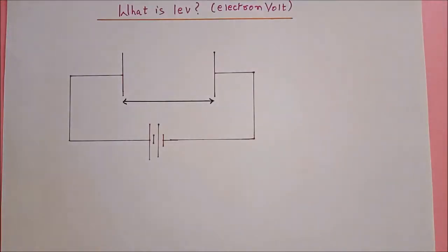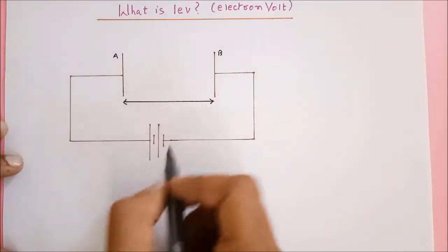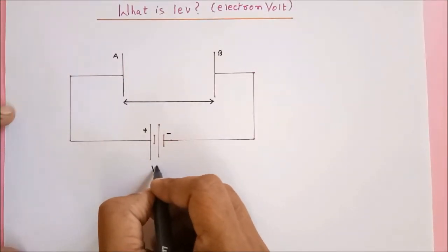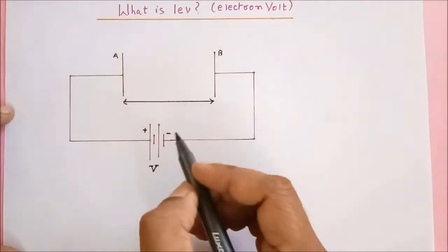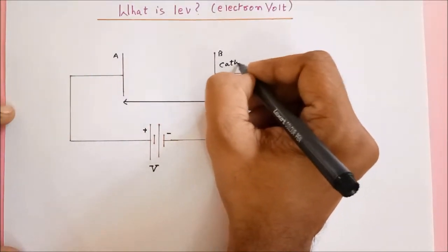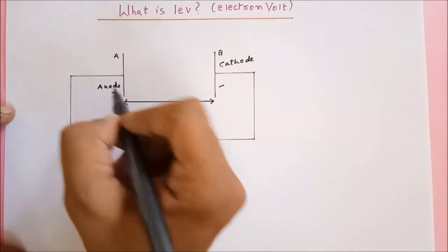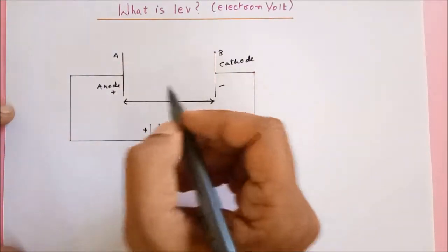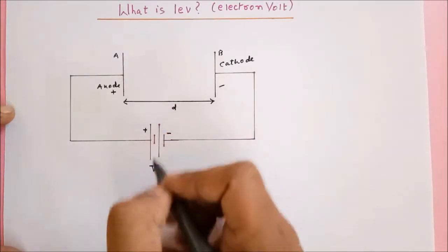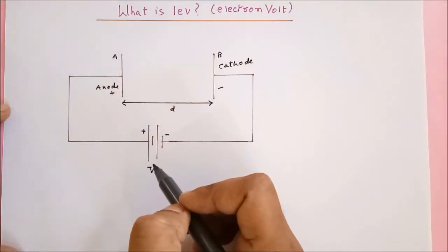Here I have a small circuit diagram in which I have two metal plates A and B. These two metal plates are connected with a battery. This is the positive terminal, this is the negative terminal. Suppose V is the potential difference across the battery. Since I have connected plate B with the negative terminal, it becomes cathode and this becomes anode. Anode is positive, cathode is negative. The distance between these two plates I have kept D centimeters — you can convert this into meters too. So we have plates A and B connected with a battery whose potential difference is V.